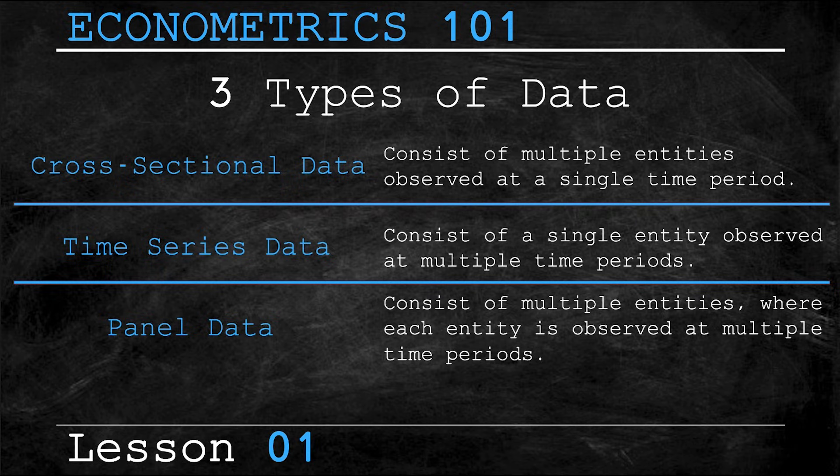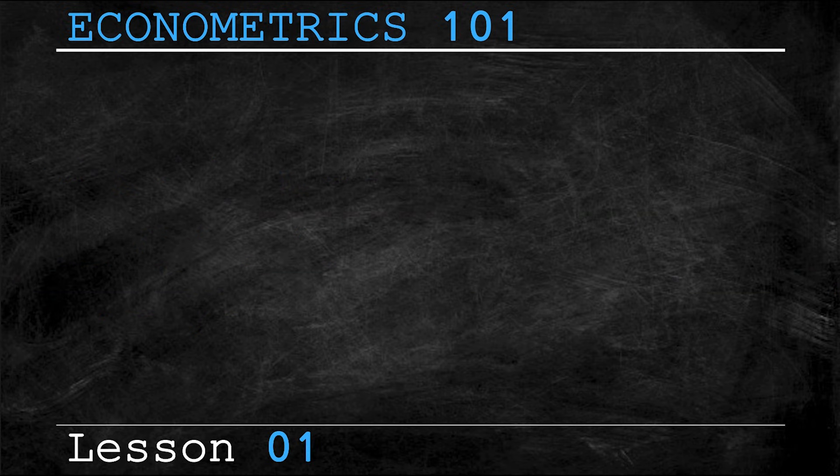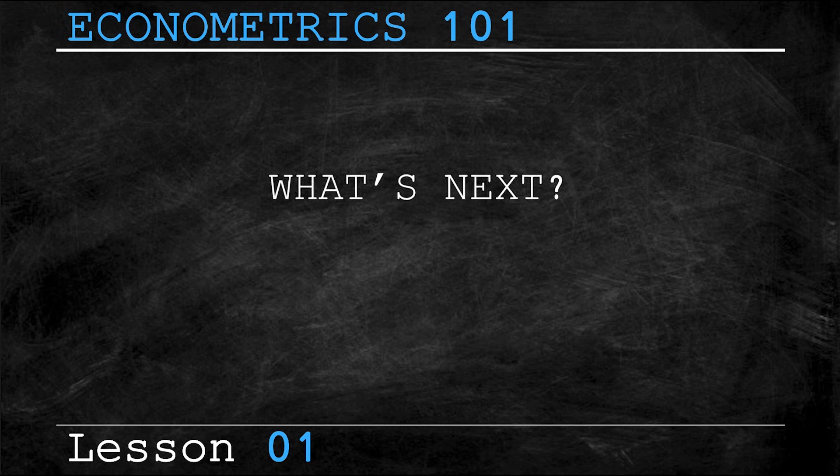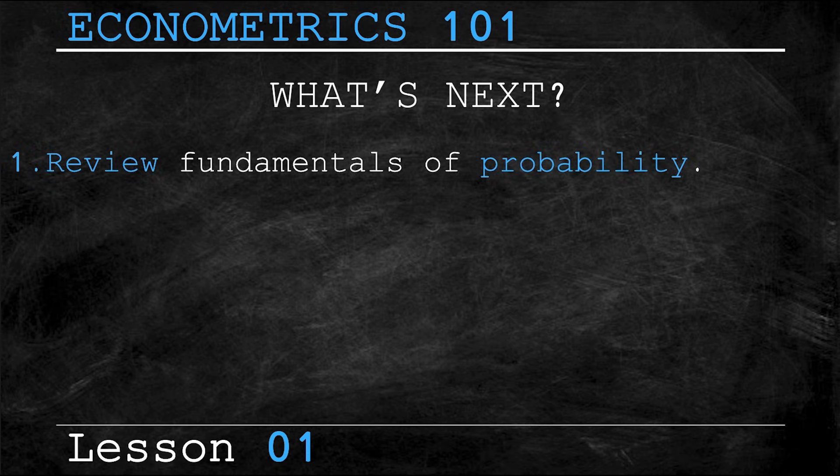Now I know this is a lot of information to be retaining in a single video, but we want to provide a roadmap for the content that we will be making in the future for the Econometrics 101 series. After this brief introduction to Econometrics, we will be reviewing the fundamentals of probability, including concepts such as sample space, discrete random variables, the Bernoulli distribution, skewness, kurtosis, and so on.